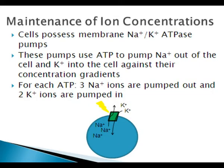Because potassium passively leaks out of the cell, there needs to be a mechanism in order to maintain the ionic concentration. These pumps use ATP to pump sodium out of the cell and potassium into the cell against their concentration gradients. For each ATP that is hydrolyzed, three sodium ions are pumped out and two potassium ions are pumped in.